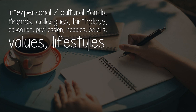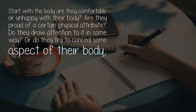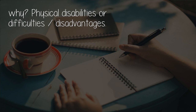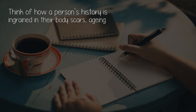Personal history: major events in the life, including the best and the most traumatic. Start with the body — are they comfortable or unhappy with their body? Are they proud of a certain physical attribute? Do they draw attention to it in some way, or do they try to conceal some aspect of their body, and why? Consider physical disabilities or difficulties. Think of the impact of a physical vulnerability on their self-image and behavior. Think of how a person's history is ingrained in their body — scars, aging.